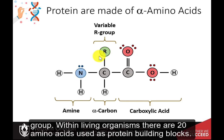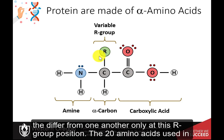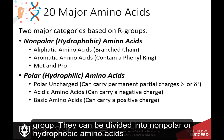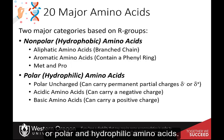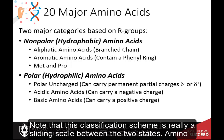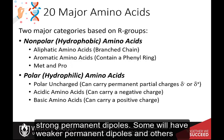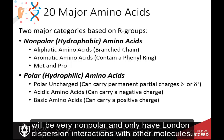Within living organisms, there are 20 amino acids used as protein building blocks. They differ from one another only at this R group position. The 20 amino acids used in protein synthesis can be subdivided into two major types based on the structure of the R group: nonpolar or hydrophobic amino acids, or polar and hydrophilic amino acids. Note that this classification scheme is really a sliding scale between the two states. Amino acids with the highest polarity potential will be able to form full charges. Others will carry strong permanent dipoles, some will have weaker permanent dipoles, and others will be very nonpolar and only have London dispersion interactions with other molecules.